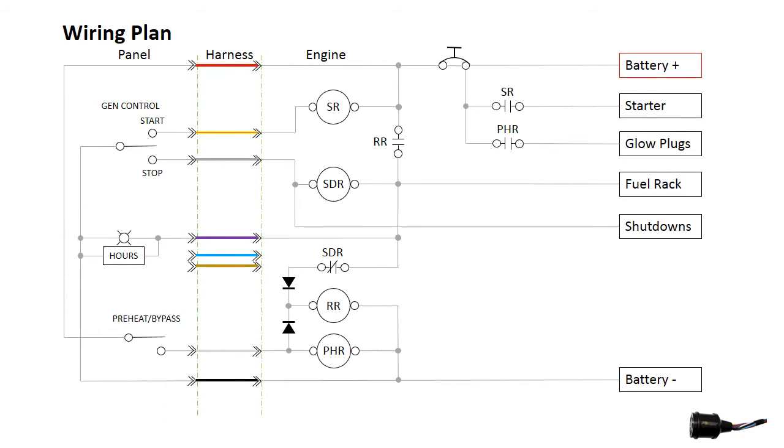The extension harness contains eight wires, but we are omitting the gauge sender wires for simplicity. Let's look at the wiring with the generator at rest.